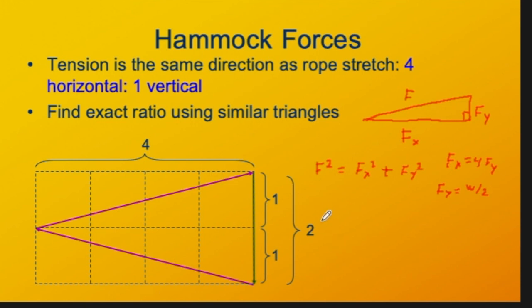We can combine these facts. First of all, we'll use this first one. If the F of X is four times F of Y, then the square of that equals 16 times F of Y. That's 17 times F of Y squared.